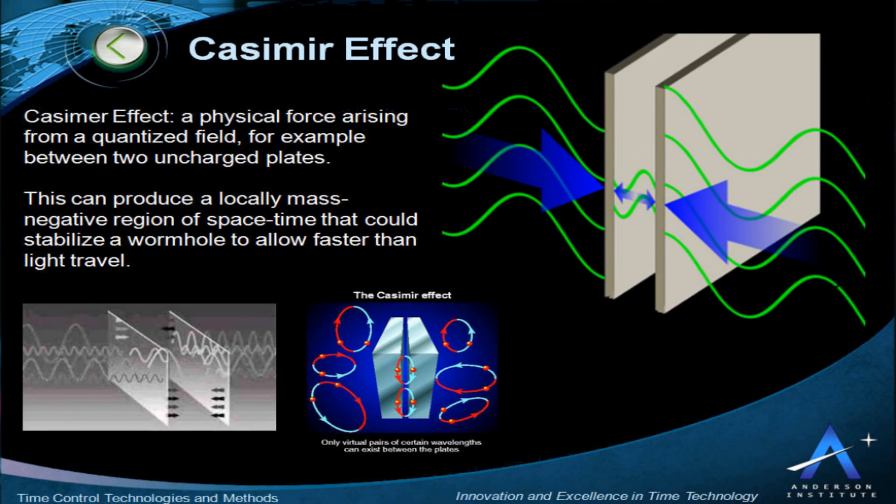According to quantum theory, the vacuum contains virtual particles which are in a continuous state of fluctuation. Casimir realized that between two plates, only those virtual photons whose wavelengths fit a whole number of times into the gap should be counted when calculating the vacuum energy. The energy density decreases as the plates are moved closer together, which implies that there is a small force drawing them together.